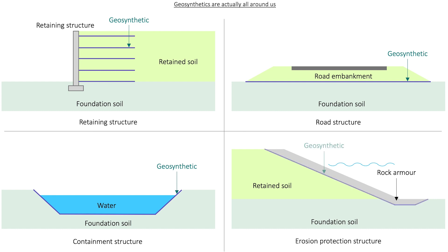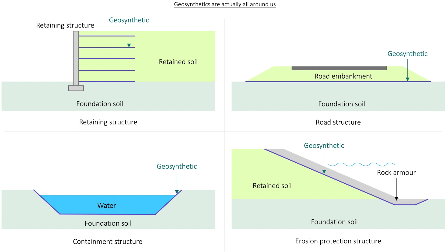Even for beach erosion protection structures, there could be a geosynthetics filter layer in between the rock armours and the retained soil, so that the soil behind is retained even under wave or water actions. This brings us to one key question.